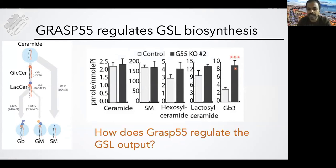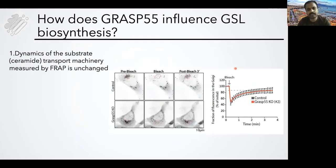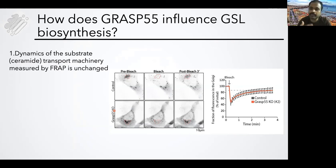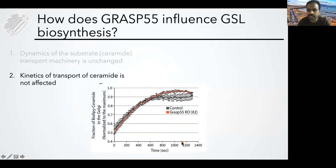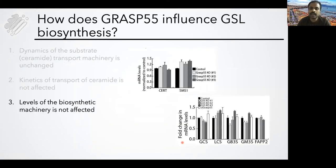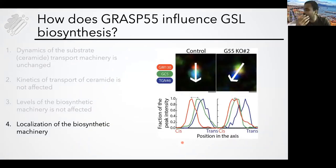So how does GRASP55 regulate this GSL output? We looked at several things. First, we looked at whether CERT-mediated transport of ceramide was functioning well in these cells — the dynamics of CERT itself, which cycles between the Golgi and cytoplasm. The cycling was not changed, the dynamics of the protein was not changed, and the transport of ceramide to the Golgi also was not changed. The levels of the enzymes showed no coherent change among the clones. So we looked at the intra-Golgi localization of the proteins.